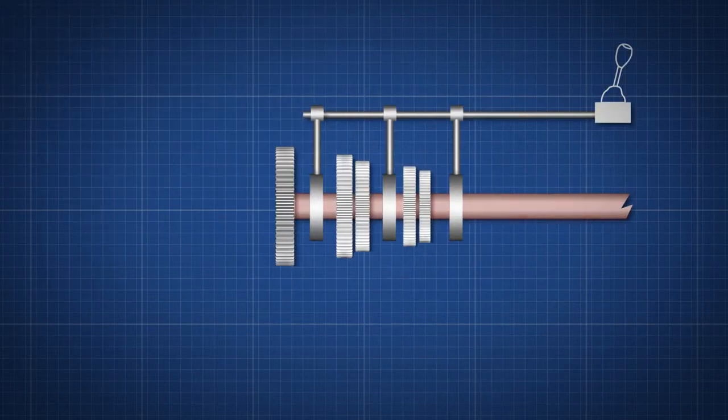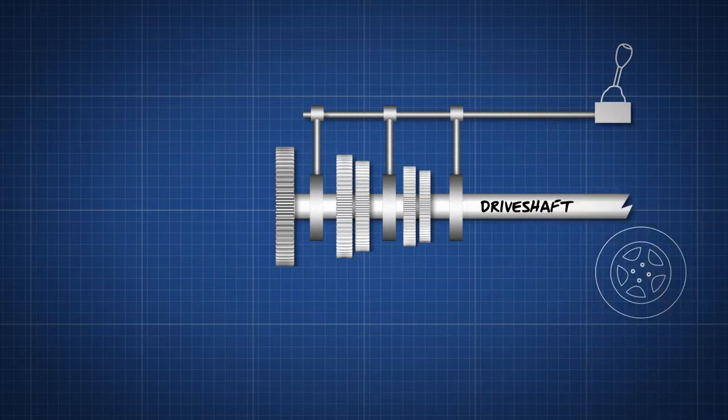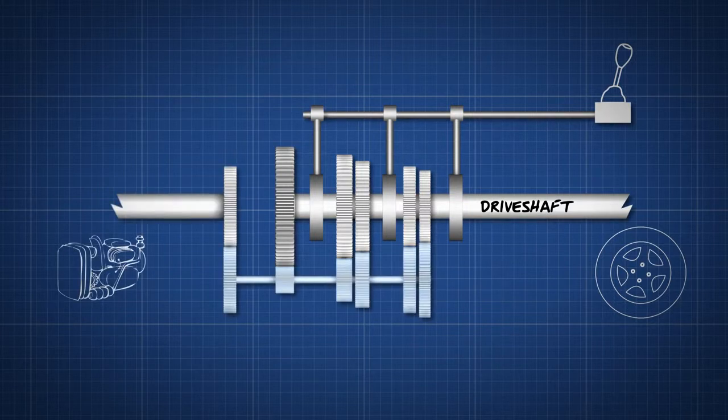These gears are on a shaft that is connected to the wheels. It's called the drive shaft. To make a car move, you have to connect the clutch from the engine to the drive shaft.